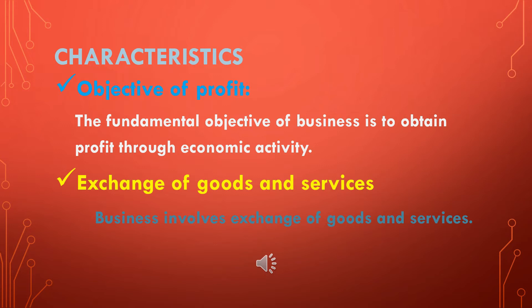The second characteristic is exchange of goods and services. Goods and services are sold either by manufacturing or by purchasing. The producer may sell directly or distribute to a wholesaler, who distributes to a retailer, until it reaches the consumer. Goods exist in physical form while services are invisible or intangible — for example, a doctor's service is intangible and invisible, but we can experience its effect.